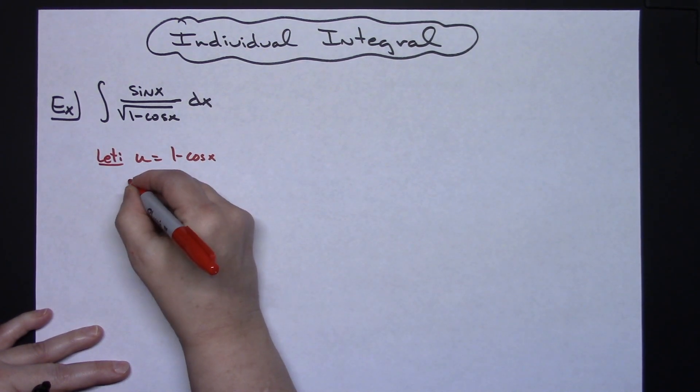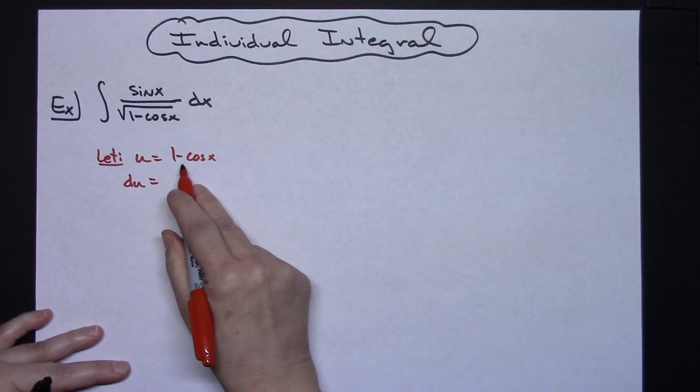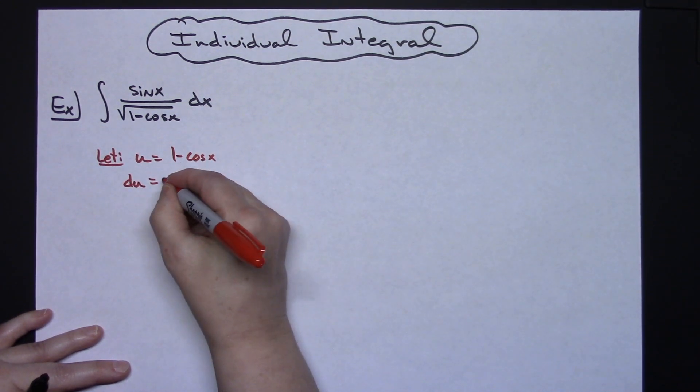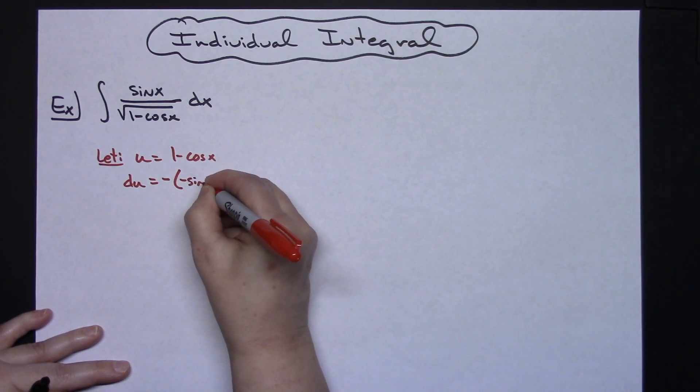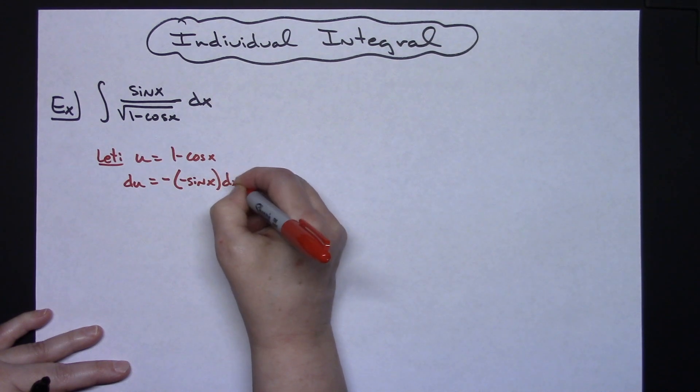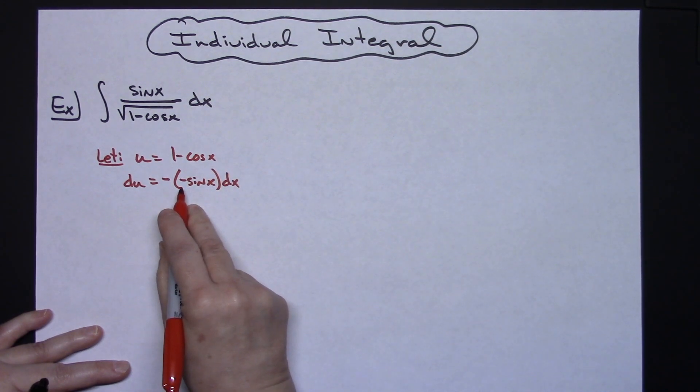Then I need to take the derivative. The one's going to fall out. I'm going to have the minus sign that's already there and then the derivative of cosine is a negative sine x dx. A negative times a negative is going to make that a positive.